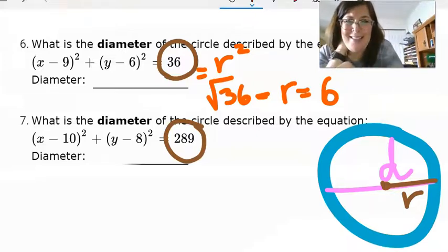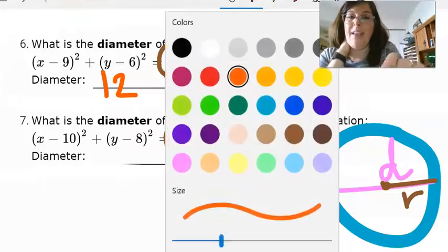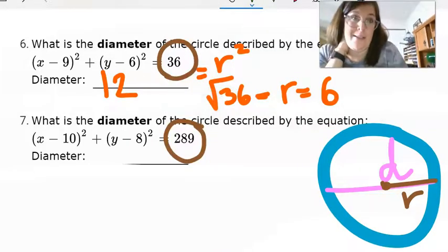So if the radius is six, that means the diameter is double that. It's 12. Really, it's that simple. Sometimes when they're this easy, you guys think there's some trick.